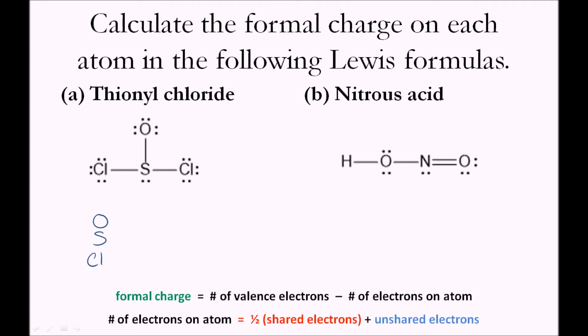So we'll write that down: six, six, and seven. This first column is the number of valence electrons, and we'll get a second column with the number of electrons currently on the atom.